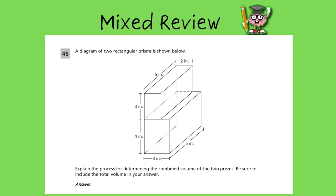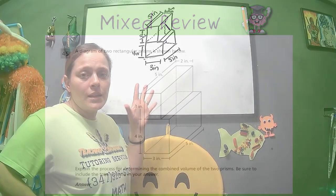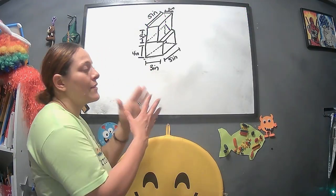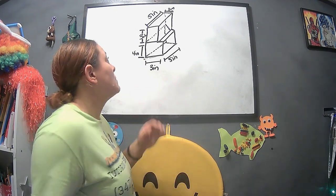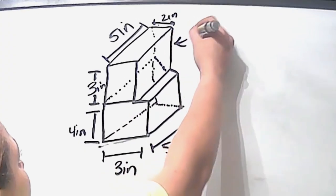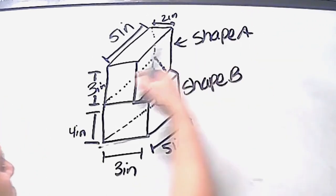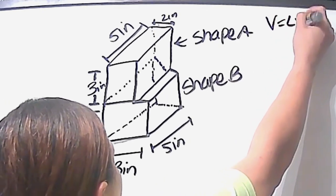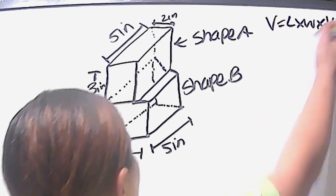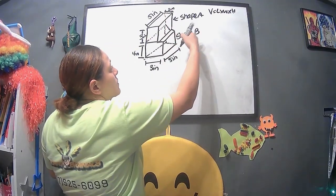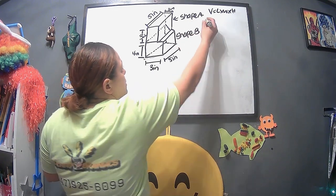A diagram of two rectangular prisms is shown below. So explain the process for determining the combined volume of the two prisms. Be sure to include the total volume in your answer. So if you know anything about total volume, when it comes to shapes like this, you would have to separate the two, and you could break it up by saying shape A and shape B. So you would have to find the volume, which is length times width times height, with this shape, plus this, then find the volume of this shape.